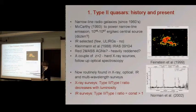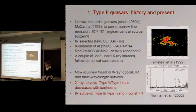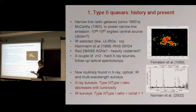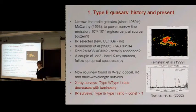Here's an example: a rest-frame UV spectrum showing strong narrow emission lines, practically no continuum — and it's a pretty powerful X-ray source. These days the situation has changed. These objects are now routinely found in X-ray, optical, infrared, and multi-wavelength surveys. There are many dozens of type 2 quasars known, and so the question has gone from trying to find them on an individual basis to trying to measure their contribution to source counts at every wavelength and to measure how many of them there are.